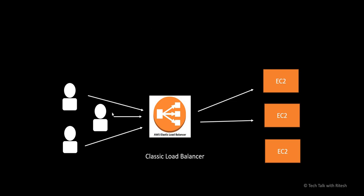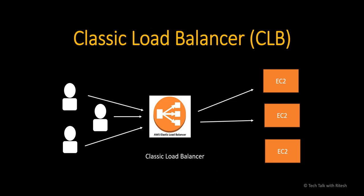This is how Classic Load Balancer works: users send requests, the load balancer decides which EC2 instance is free, routes that request to that instance, and the instance serves the response. That's it for this video — thank you so much for watching.